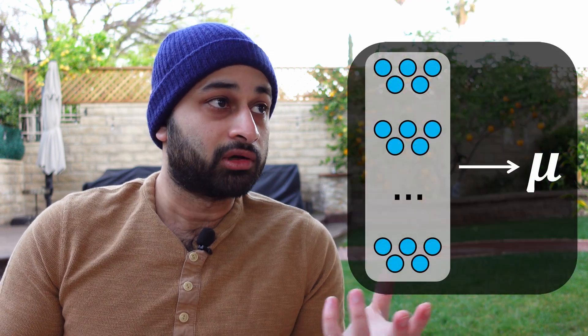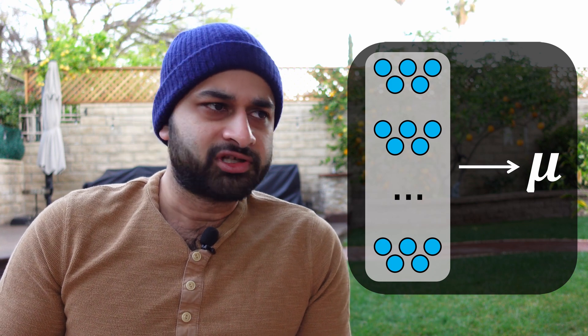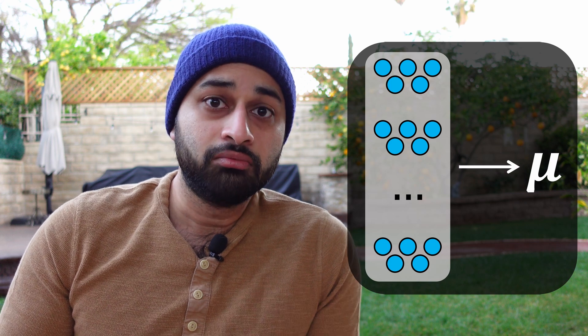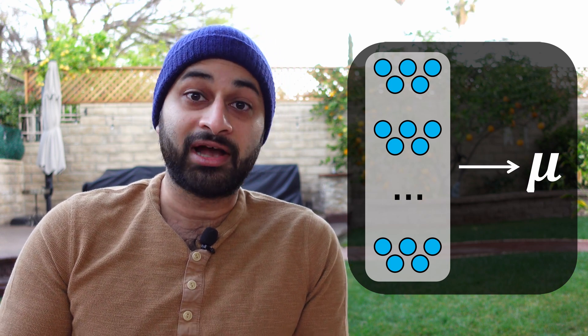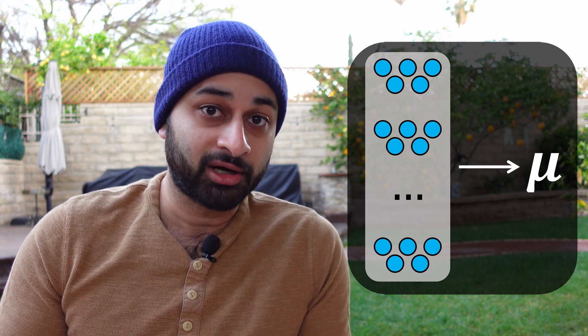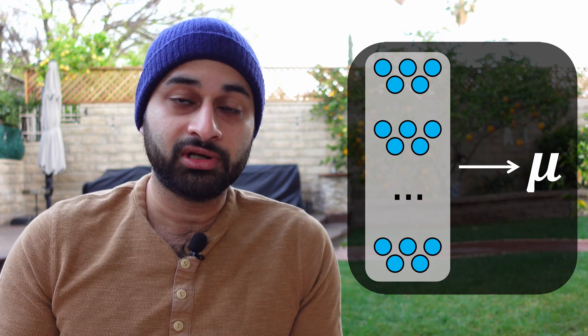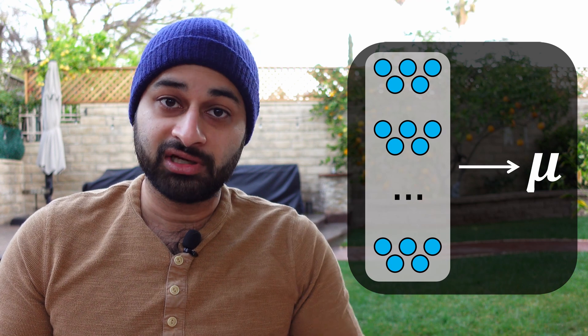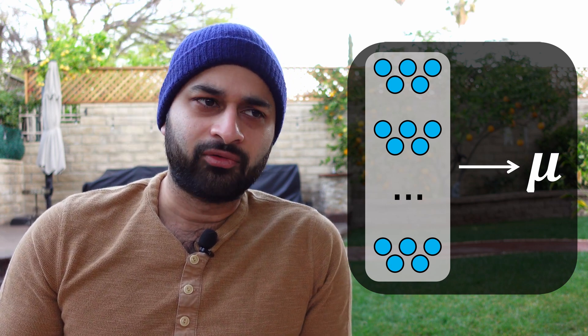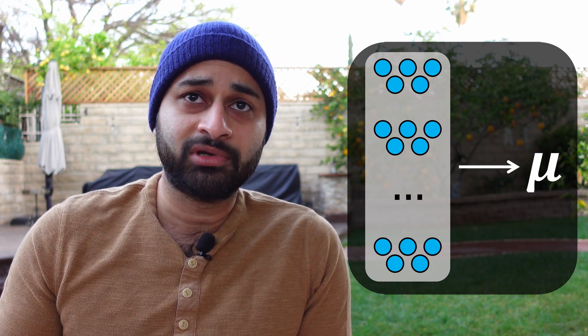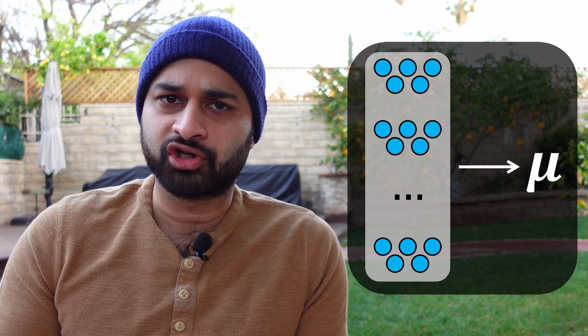Another researcher on your team has a different idea: since we have a small sample size issue looking at coffee shops individually, what if we just pool all 50 measurements into one large group and report the average there? The good part of this idea is that we address the low sample size issue — we now have 50 samples, which is tenfold bigger, so we can have a lot more confidence in that average and it's less affected by outliers. But the obvious downside is that we're no longer tackling the task at hand: we wanted individual averages per coffee shop, not one grand pooled average.